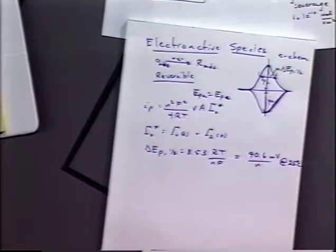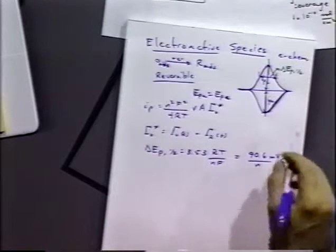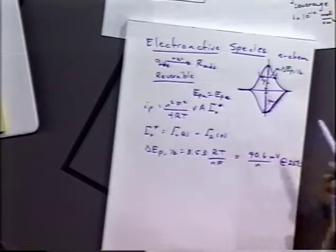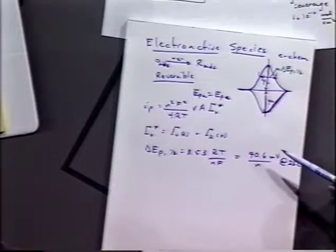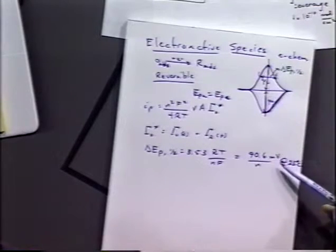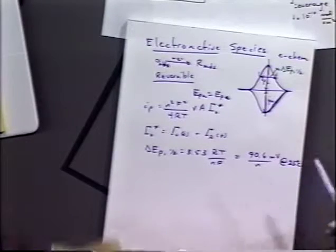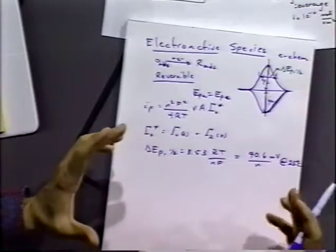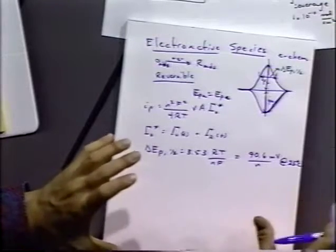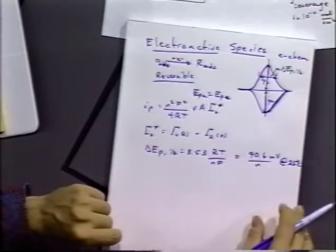And that turns out to be 3.53 RT over NF or about 90.6 millivolts per N at 25 degrees C. So as we increase the number of electrons, the sharper that peak becomes, just like it did in the CV case for diffusion-based processes. And as we increase the temperature, the width of that peak expands as well, suggesting again a Boltzmann-type distribution of the molecules.